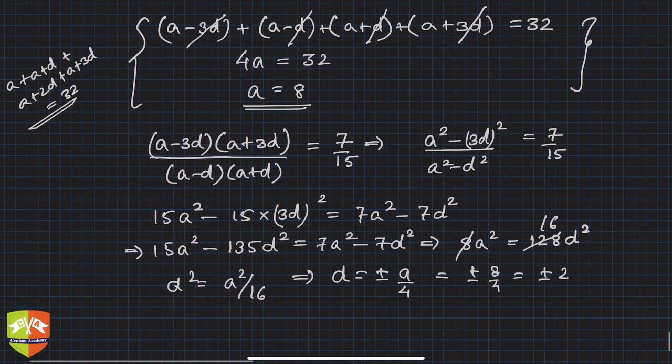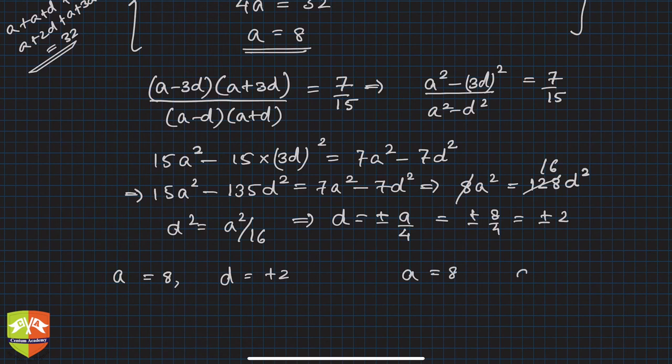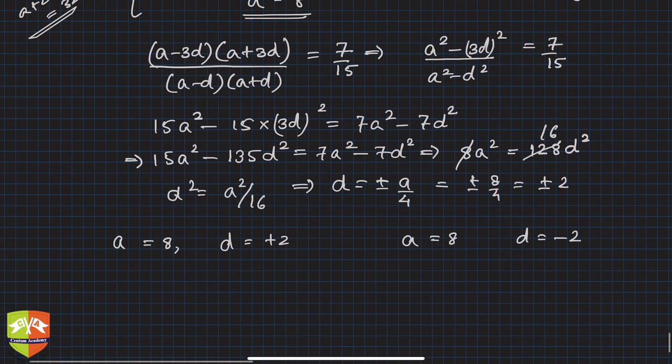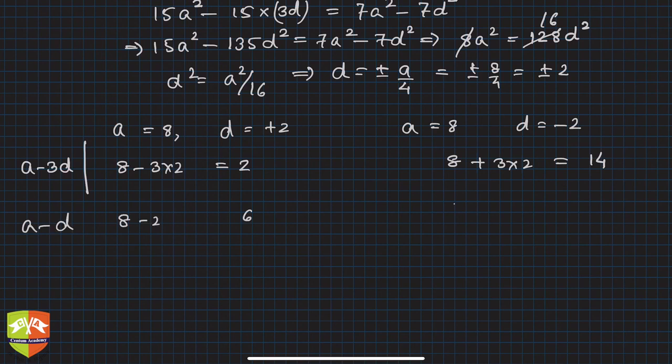We get a as 8 and d as either plus 2 or minus 2. The first term is a minus 3d, so 8 minus 6 equals 2, or 8 plus 6 equals 14. The second is a minus d, so 8 minus 2 equals 6, or 8 plus 2 equals 10.